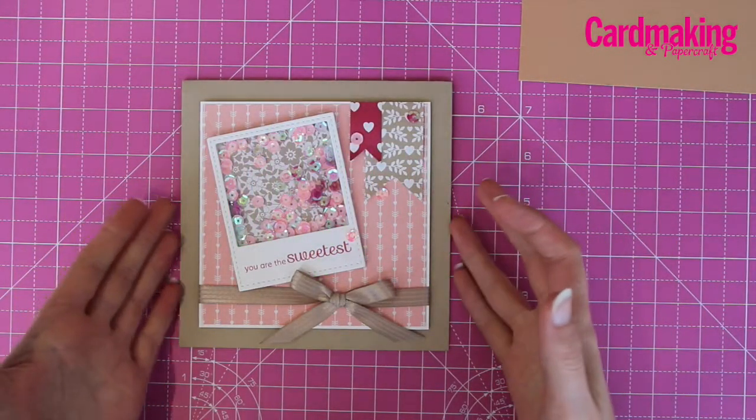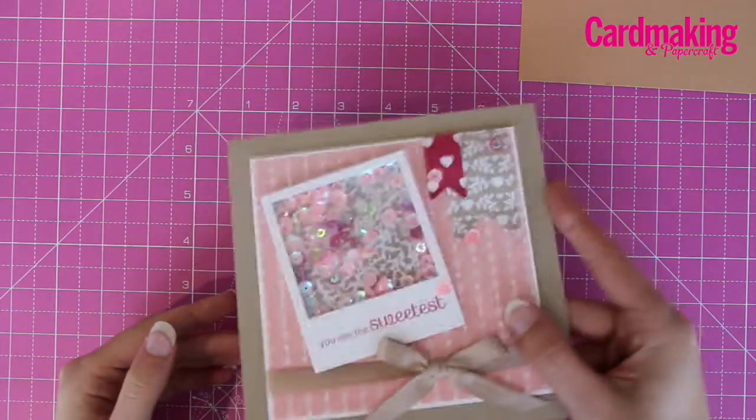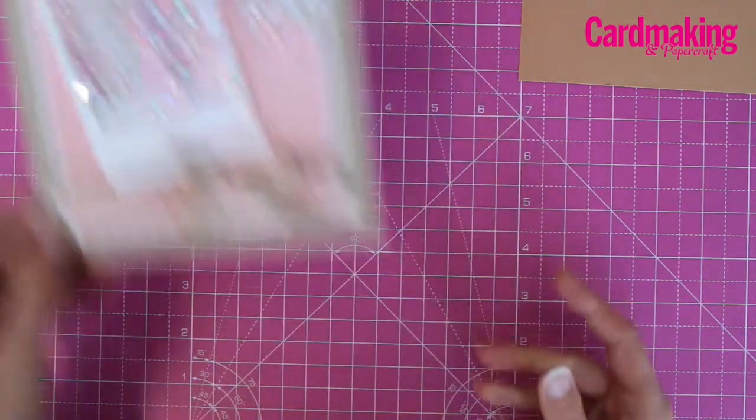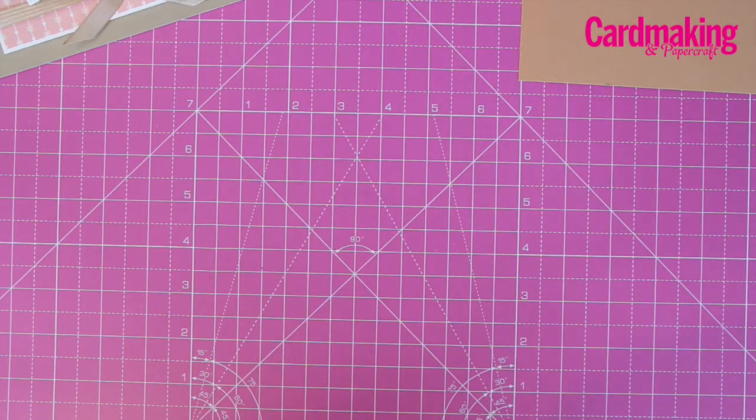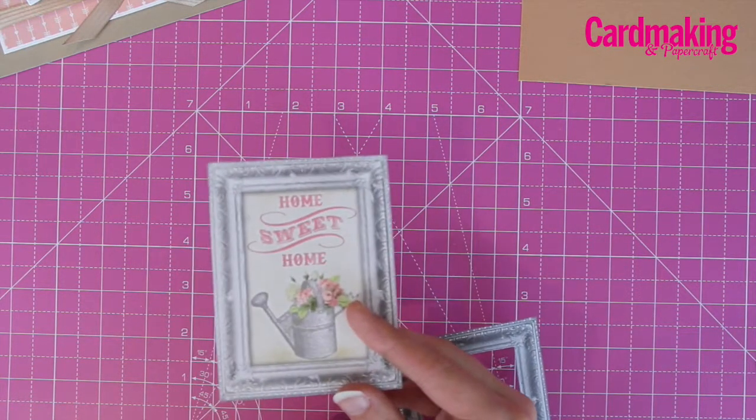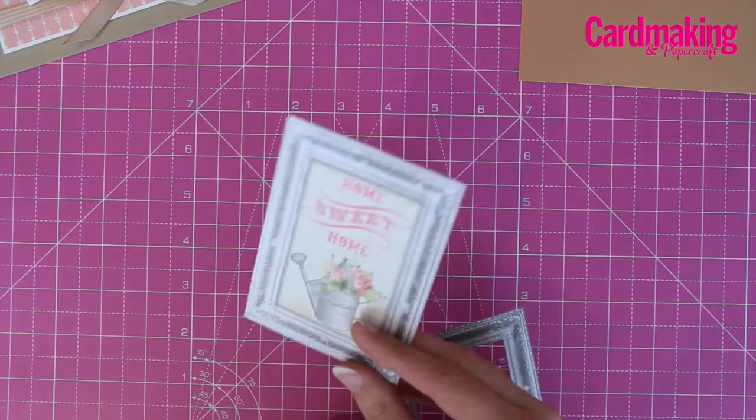This video will show you how to create a basic shaker panel like this one. You can create your panel to be any size to suit your card, and I'm using a pre-printed frame from the Bow Bunny Soiree collection.